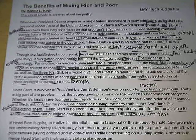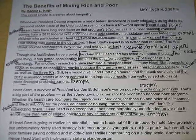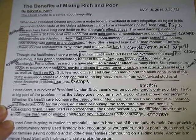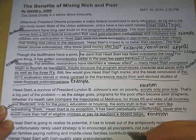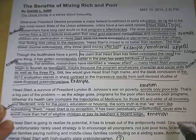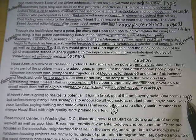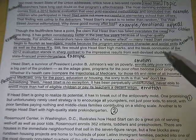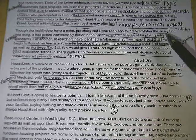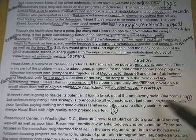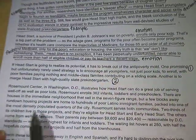The next paragraph: 'If Head Start is going to realize its potential, it has to break out of the anti-poverty mold. One promising but unfortunately rarely used strategy is to encourage all youngsters, not just poor kids, to enroll, with poor families paying nothing and middle-class families contributing on a sliding scale. Another is to merge Head Start with high-quality state pre-kindergarten.' So we have two things going on: enrolling both rich and poor kids, and merging it with pre-kindergarten. These are the two ways Head Start can work.